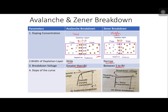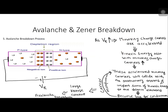The second case is Zener breakdown. After breakdown, if we plot the characteristic curve, we may find that Zener has a sharp characteristic of breakdown, whereas avalanche has a gradually changing characteristic.